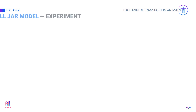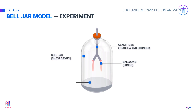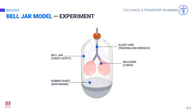Take a look at this bell jar model — it will explain the process of breathing. When the rubber sheet, acting as the diaphragm, is stretched downwards, the volume inside the jar increases. This decreases the pressure, and air is drawn in through the glass tube, which acts as the trachea and bronchi. This air inflates the balloons, which are acting as the lungs.